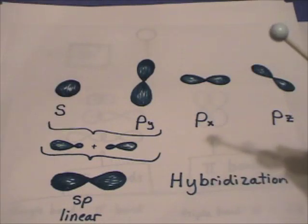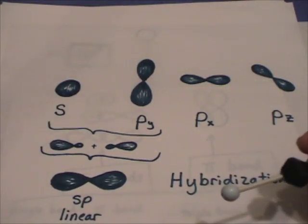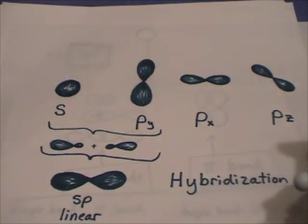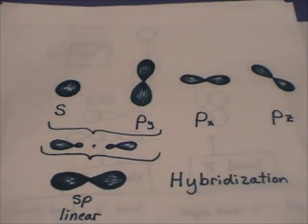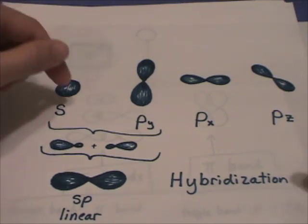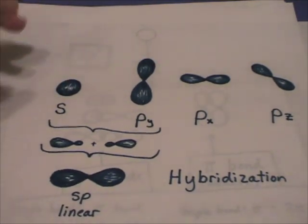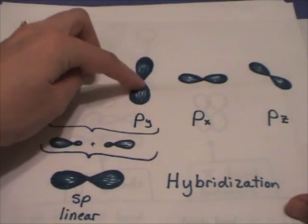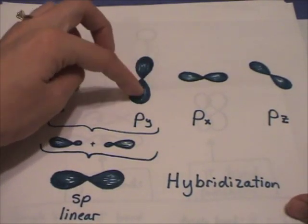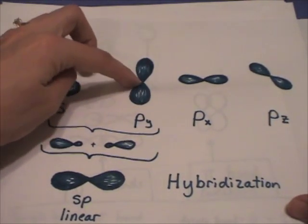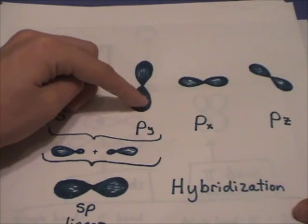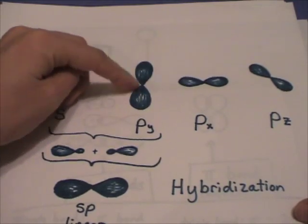An s orbital is a sphere. A p orbital is a dumbbell. These are just shapes that describe the probability of finding an electron in that space. In an s orbital, the electron could be anywhere in that sphere. In a p orbital, the electron could be anywhere above or below the nucleus in this nice little dumbbell shape.